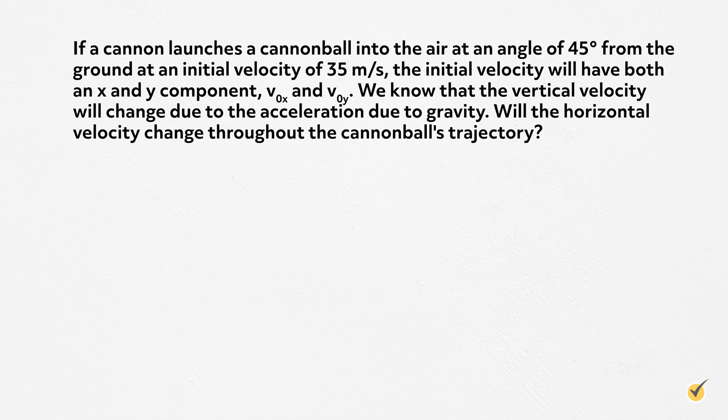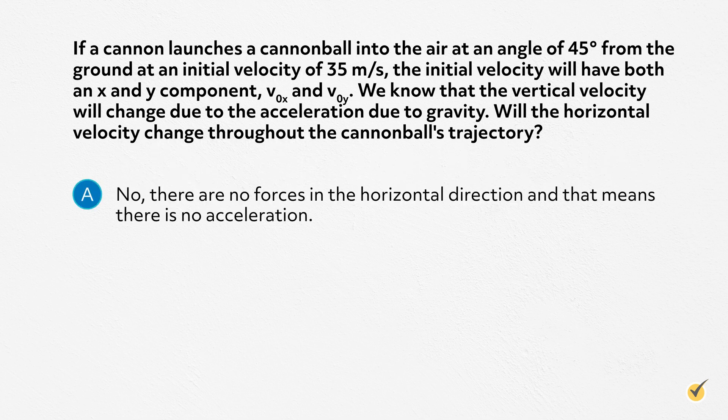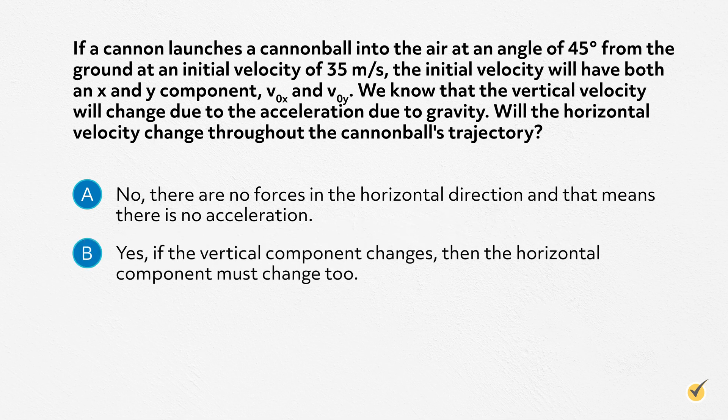Number 2. If a cannon launches a cannonball into the air at an angle of 45 degrees from the ground at an initial velocity of 35 meters per second, the initial velocity will have both an x and y component, v0x and v0y. We know that the vertical velocity will change due to the acceleration due to gravity. Will the horizontal velocity change throughout the cannonball's trajectory? A. No, there are no forces in the horizontal direction and that means there is no acceleration. B. Yes, if the vertical component changes, then the horizontal component must change too. Or C. No, but it might change if the angle were different.